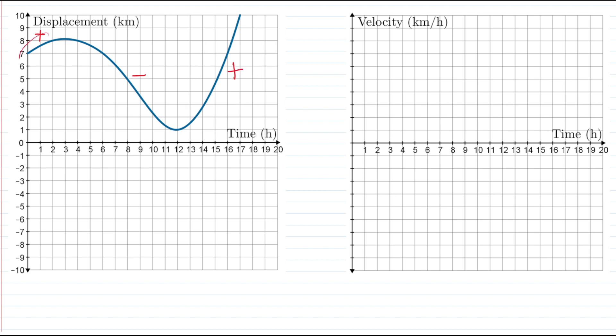Now notice that we went from positive slopes here to negative slopes here. And we did that gradually which means we must have passed through a slope of zero. So is there some point at which the slope is zero?